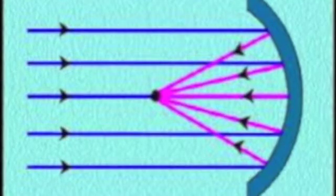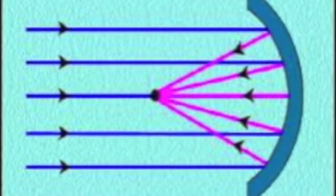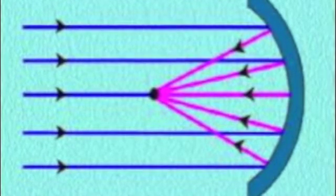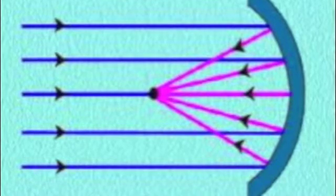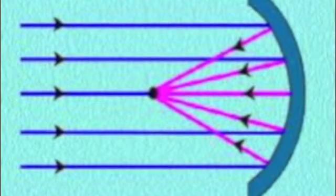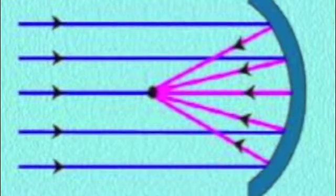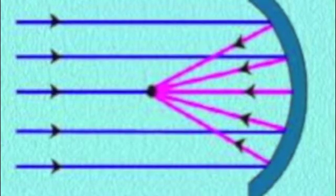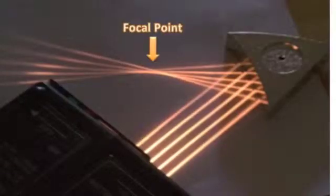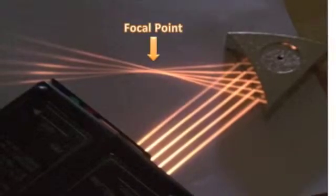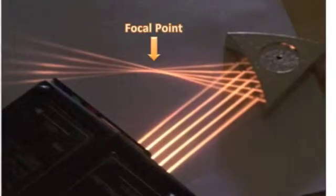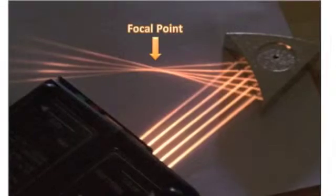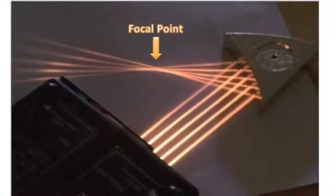Concave mirrors bend inward like a cave. These mirrors reflect light rays inward towards the center focal point. In this picture, you can see the incoming light rays, represented by the blue lines, being reflected off the concave mirror, with the reflected lights represented by the purple lines. These reflected light rays meet at a center focal point. This is a real-life example of incoming rays being reflected off a concave mirror, where all the incoming rays are reflected and meet in a center focal point before fanning out again.